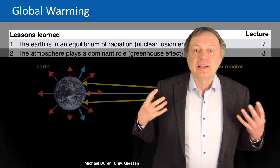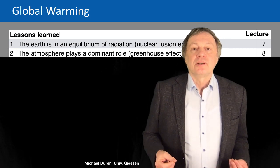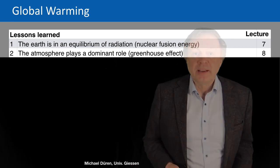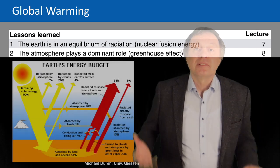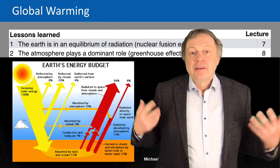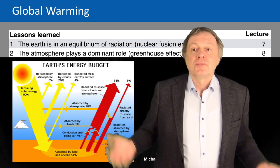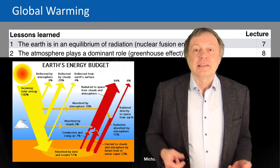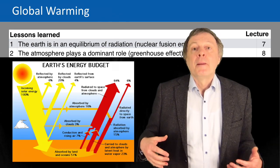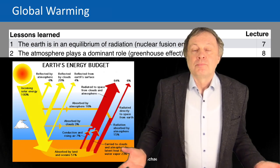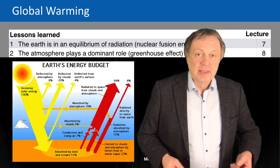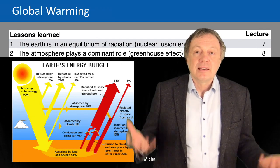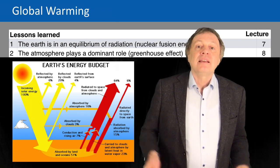In lecture 8 we learned that the atmosphere plays a dominant role, because there's the greenhouse effect. So the atmosphere is like a blanket around the earth which keeps the earth warm. Without the atmosphere, the temperature would be about minus 18 degrees Celsius, so the whole earth would be a white ball of snow basically, and it would cool down. But that's not the case — our atmosphere has greenhouse gases and they heat up the earth.